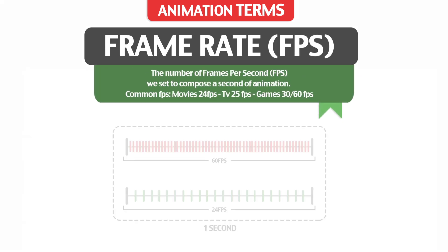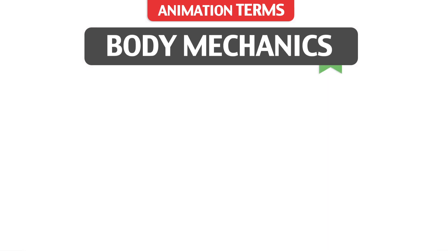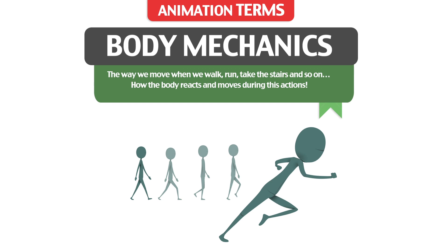Frame Rate: the number of frames per second we set to compose a second of animation. Common frame rates are 24 for movies, 25 for TV, and between 30 to 60 frames per second for games. Body Mechanics: the way we move when we walk, run, take the stairs, and so on — how the body reacts and moves during these actions.